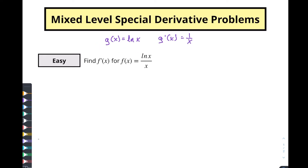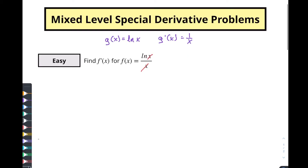Now you might think: wait a minute, I just have x's right here — I'm just going to simplify those two things out. That's why this kind of problem might be on the IB exam, because that is a common mistake that people might make. You can't do that. Remember that this thing is part of the whole function — it's not ln times x. This is the function itself and x is also a function. So in this case you need to do either the product rule or the quotient rule.